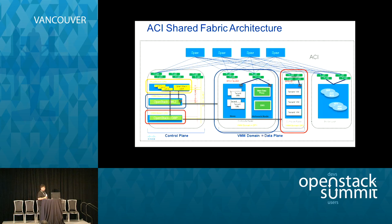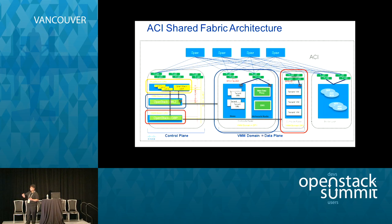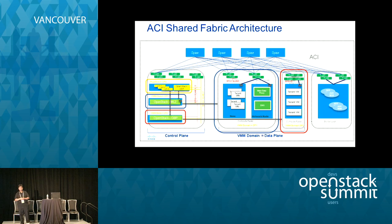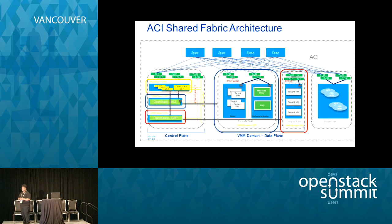From a scalability standpoint, the fabric doesn't have to be stood up with all racks upfront. You can start with 3 to 5 racks and horizontally scale out by adding more racks. If you want more port density, just add more line cards to your spine switches. If you need more control plane scale, you can add more APIC controllers. If you need more hypervisors, just add them into the fabric.